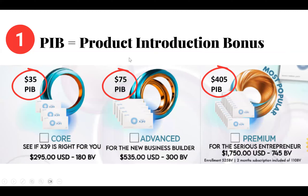One way we get paid is through the product introduction bonus, or PIB. When anyone you referred enrolls with a core pack, you earn a $35 one-time bonus. If they enroll with advanced, you get $75. If they buy our premium pack, you get $405. Every single time you enroll somebody with any of these packs, it's a one-time bonus. If they upgrade — say they came in with core and then upgrade to premium — you will get paid the difference in that PIB.